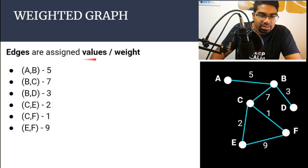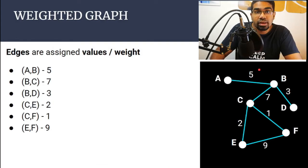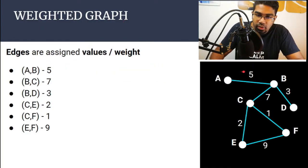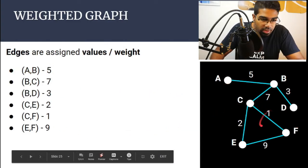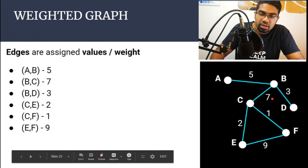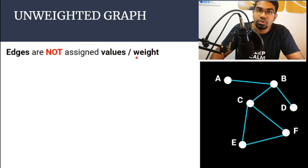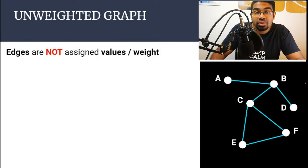For a weighted graph, the edges are assigned values or weight. For example, edge A-B is given a value of 5. These values can represent anything — distance, price, weight — any value at all. As long as an edge is assigned a value, it is known as a weighted graph. So A-B has weight 5, B-C has weight 7, C-F has weight 1, E-F has weight 9, and so on. An unweighted graph does not have any values or weight assigned to the edges.